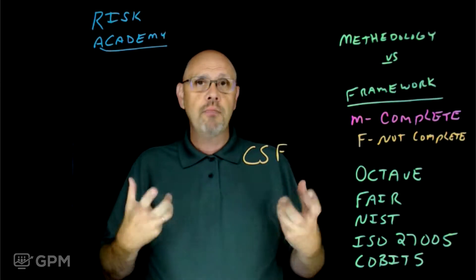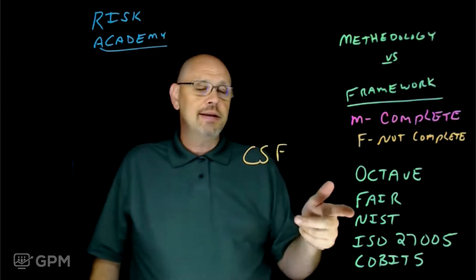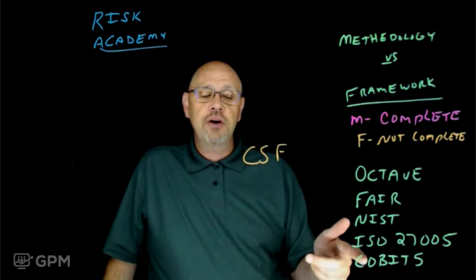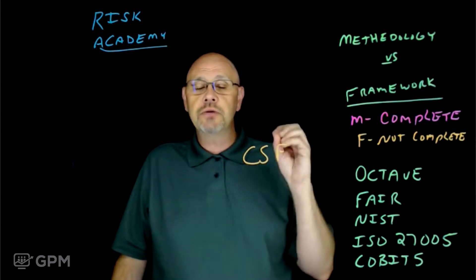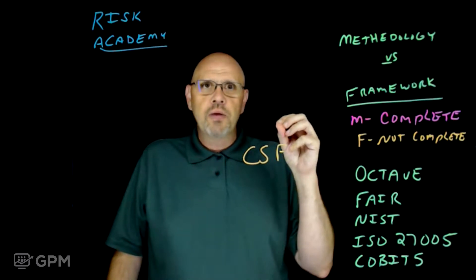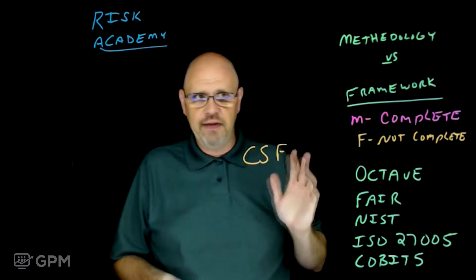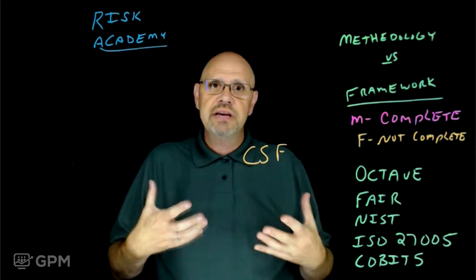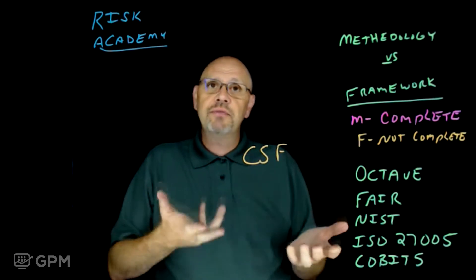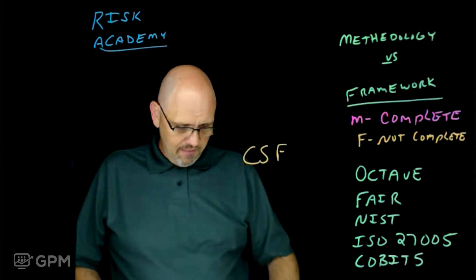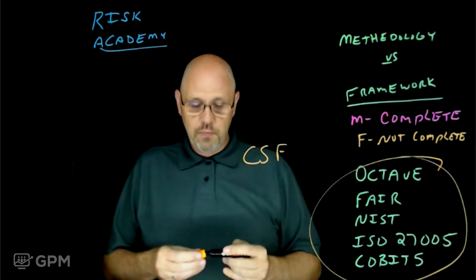There are some industry frameworks and models: Octave, FAIR, NIST, ISO 27005, COBIT-5 — those are just the most common ones. If you do an internet search for risk methodology or risk framework, you're going to come up with a hundred of them. As an organization, you have to understand what you're trying to do and then see which one fits. But here's the thing: every single one of these was built for other industries.